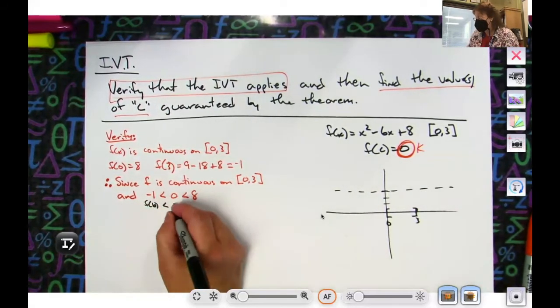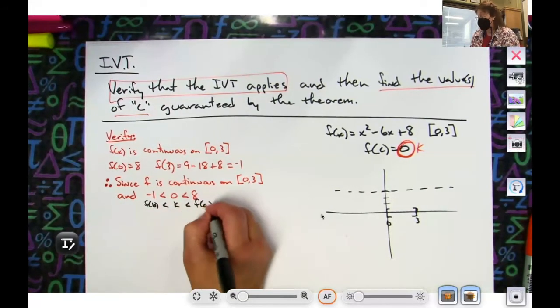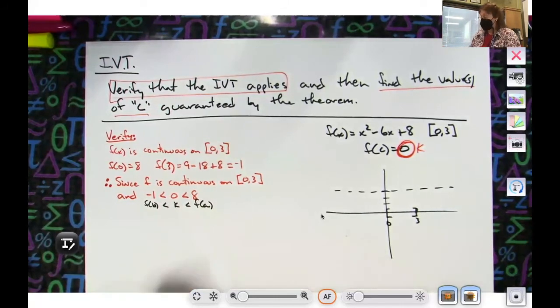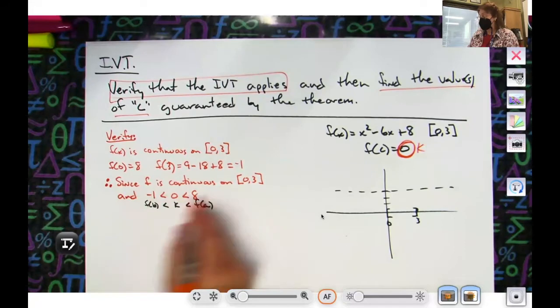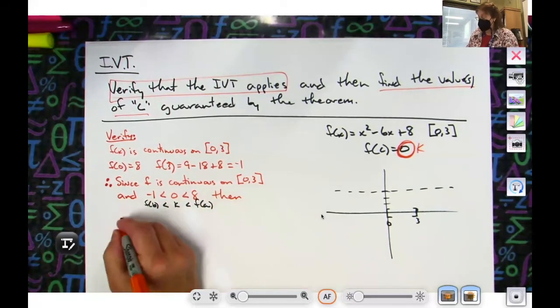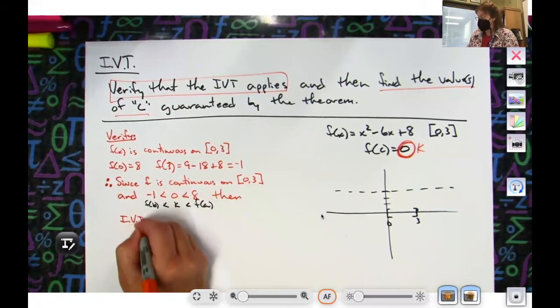Let's see, where did that come from? This is the f(b) is less than my k value is less than my f(a) value, if you're referring back to the theorem. So since f is continuous on that and this statement is true, then intermediate value theorem applies and I've verified.